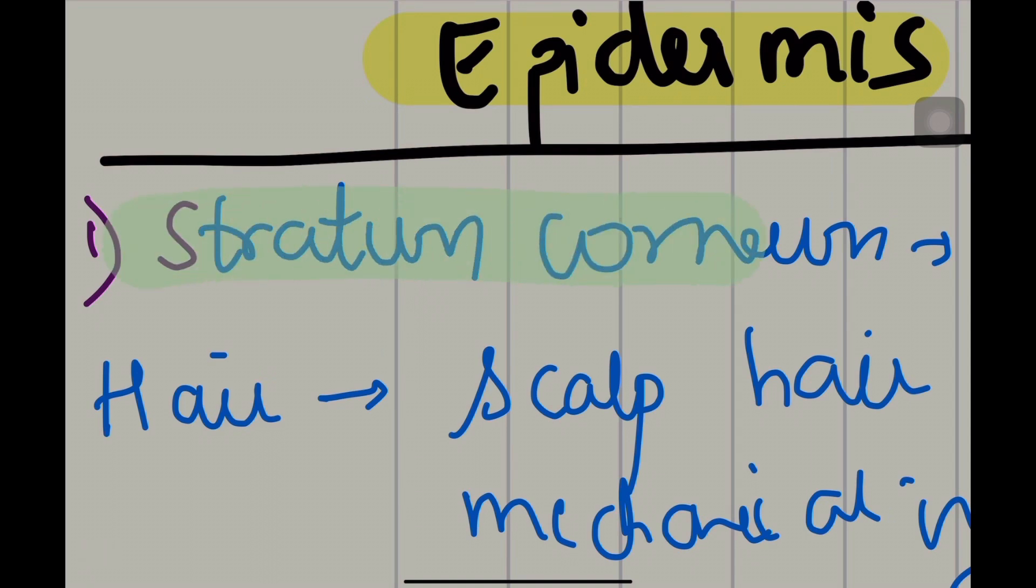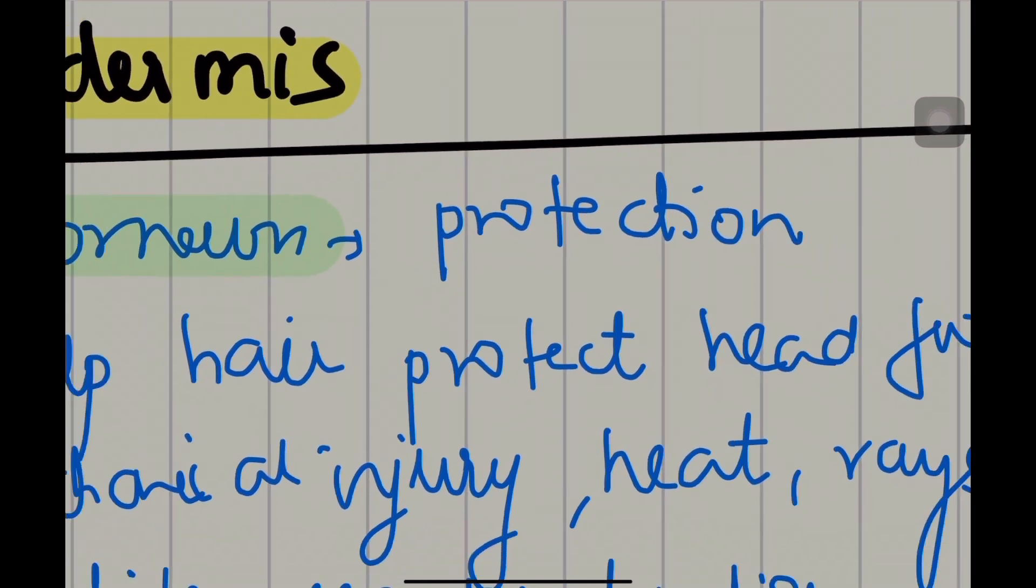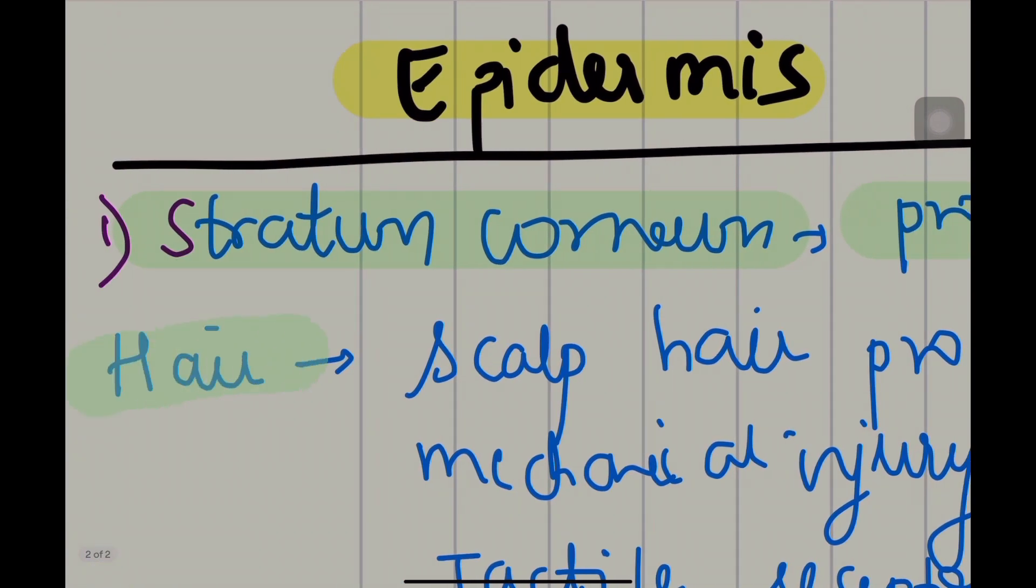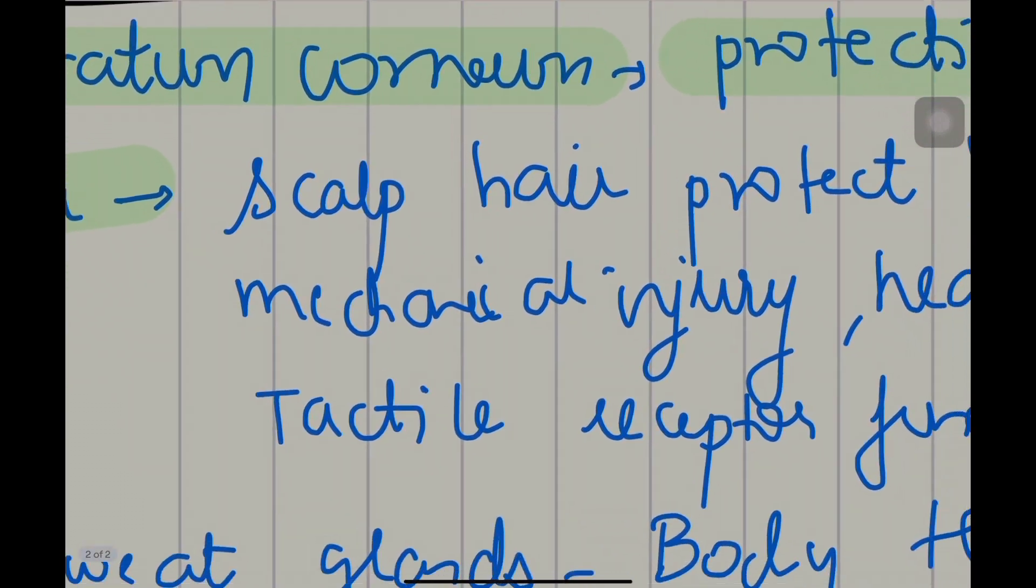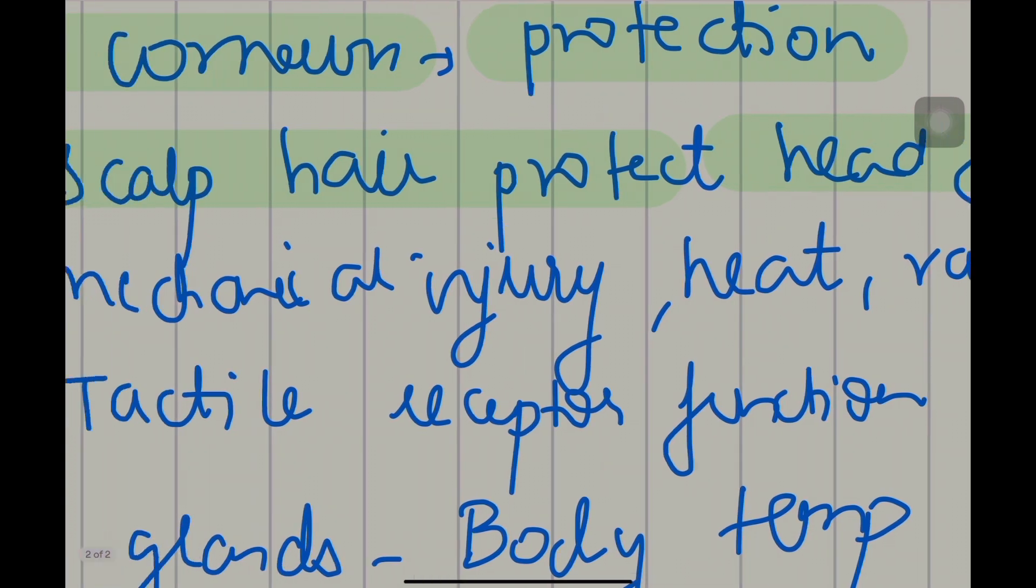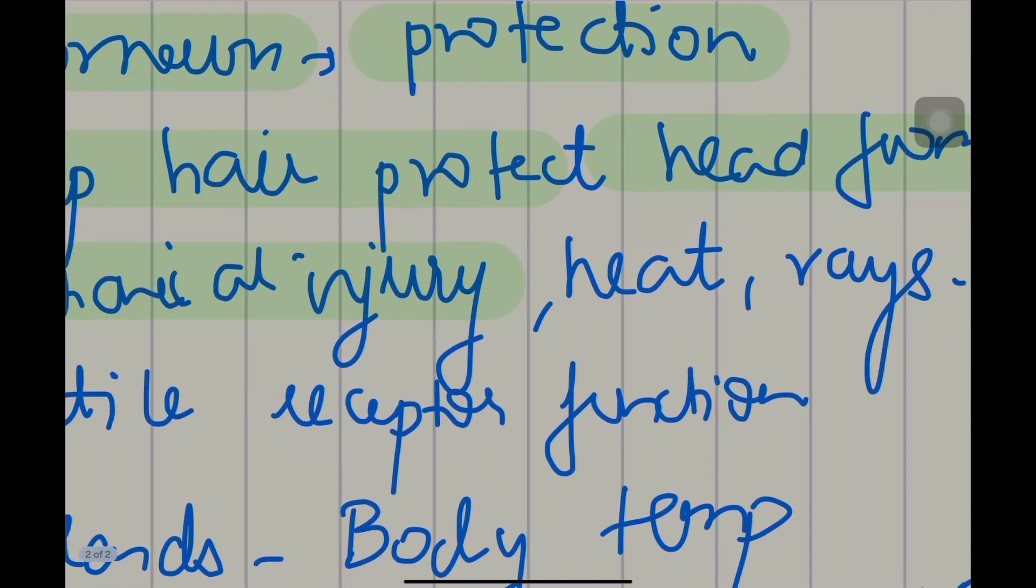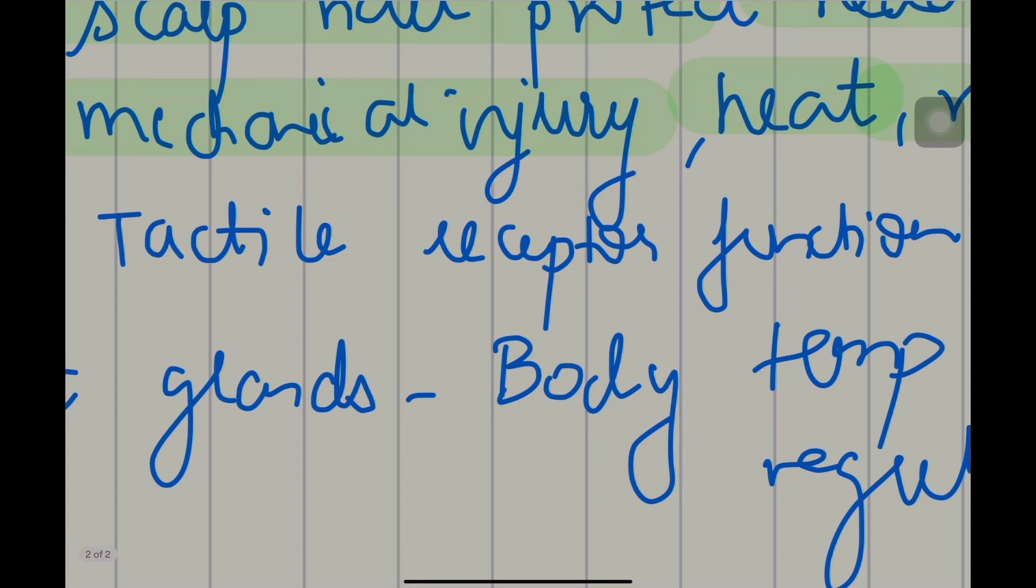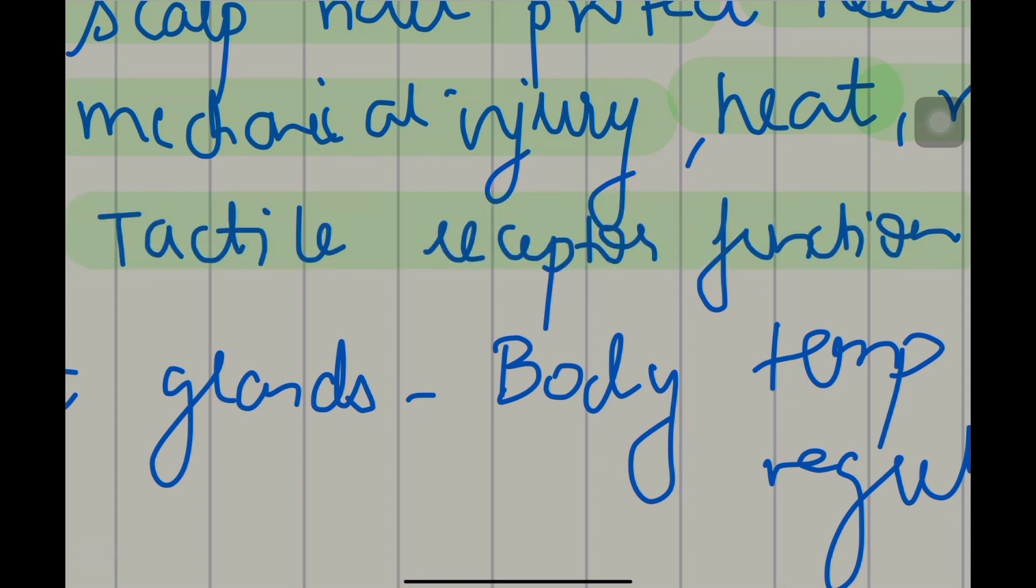The first function is stratum corneum. The function is protection. Stratum corneum also contains hair. Hair function: scalp hair protects the head from mechanical injury, heat, and rays. Also, the hair have tactile receptor functions.